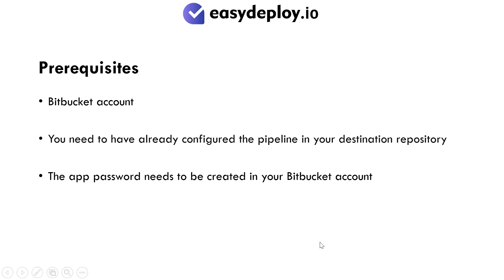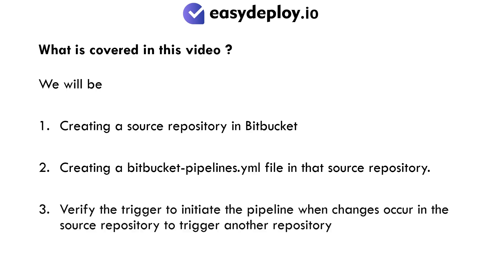Prerequisites: You need a Bitbucket account and must have already configured the pipeline in your destination repository. The app password also needs to be created in your Bitbucket account.